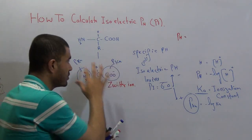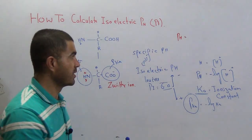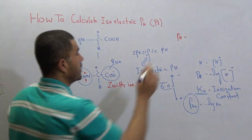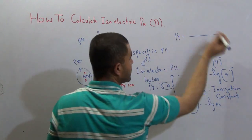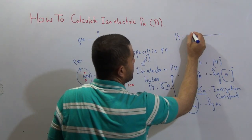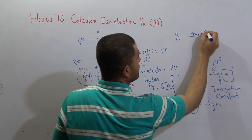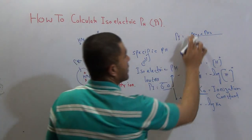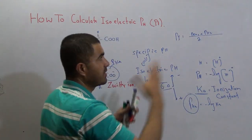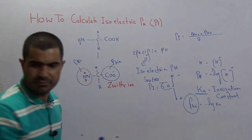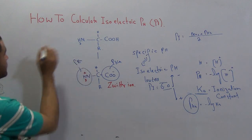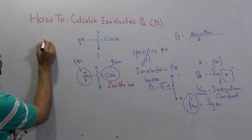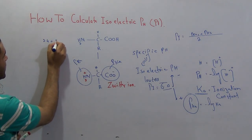Take the average of these two pKa values and whatever result you get will be the isoelectric pH. You will take pKa1 and pKa2, add them, and divide by two. For leucine, the two pKa values are 2.4 and 9.6.